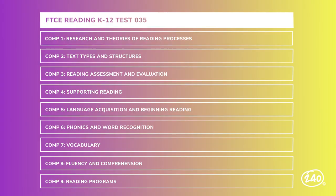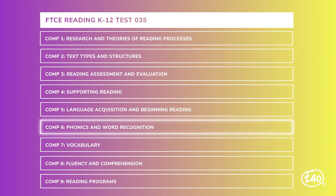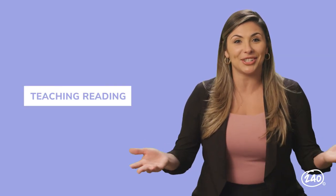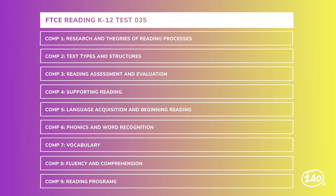The FTCE Reading Exam consists of nine competencies. This exam covers research and theories of reading processes, text type and structures, reading assessment and evaluation, supporting reading, language acquisition and beginning reading, phonics and word recognition, vocabulary, fluency and comprehension, and reading programs. Basically, this exam is all about teaching reading. The test is approximately 100 multiple choice questions, and each competency is worth between 10 and 15 percent of the exam.